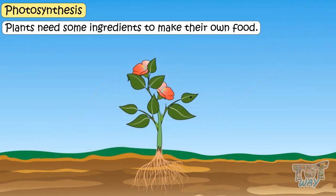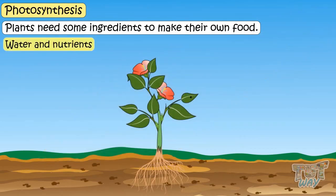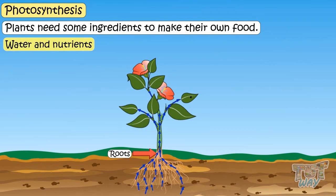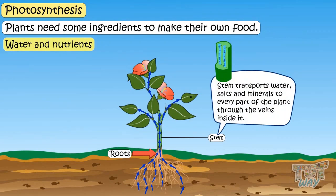Second: water and nutrients. Plants get water and nutrients from the soil. Roots absorb the water and nutrients from the soil. And the stem transports this water, salts, and minerals to every part of the plant through veins inside the stem.